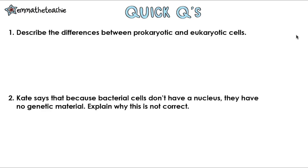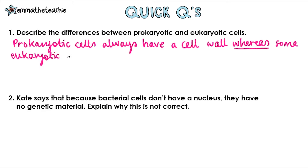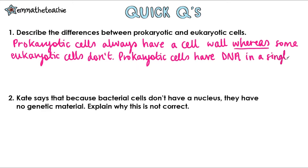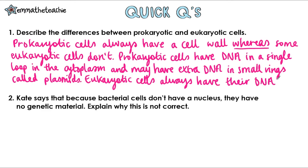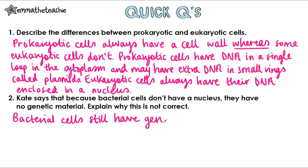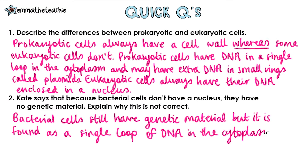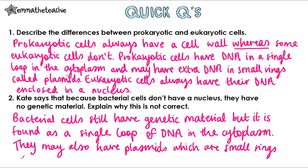Now it's time for some quick questions. Pause the video, give these questions a go, and then press play when you want to go over them. Number one: describe the differences between prokaryotic and eukaryotic cells. Prokaryotic cells always have a cell wall, whereas some eukaryotic cells don't. Prokaryotic cells also have DNA in a single loop in the cytoplasm and may have extra DNA in small rings called plasmids. Eukaryotic cells always have their DNA enclosed in a nucleus. You could also mention that prokaryotic cells never have chloroplasts or mitochondria. Number two: Kate says that because bacterial cells don't have a nucleus, they have no genetic material — explain why this is not correct. Bacterial cells still have genetic material, but it is found as a single loop of DNA in the cytoplasm, and they may also have plasmids, which are small rings of extra DNA.